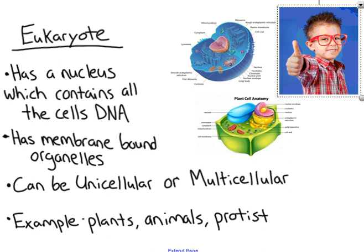Eukaryotic cells can be either unicellular or multicellular, and most of the living things you know today are eukaryotic — plants, animals, and protists like an amoeba. Pretty much everything you know that is living would be classified as eukaryotic.